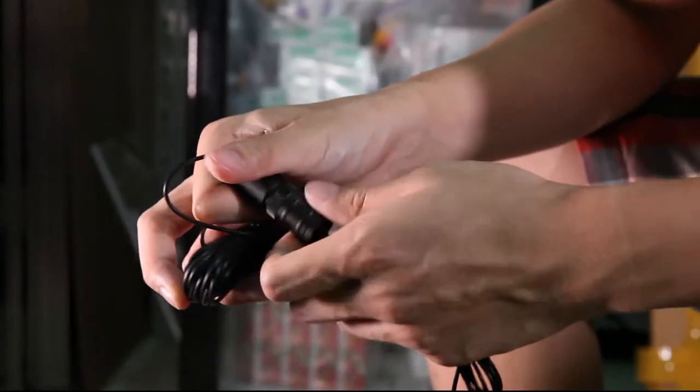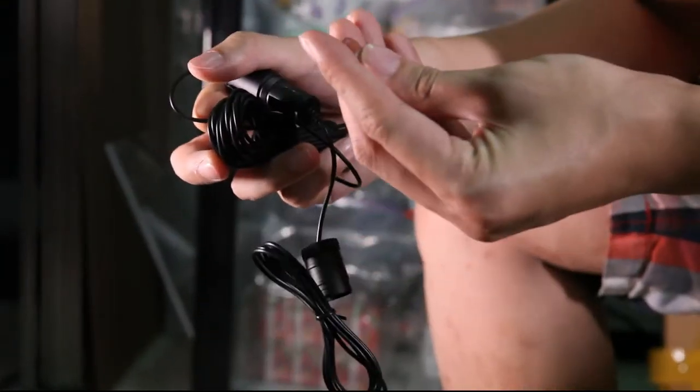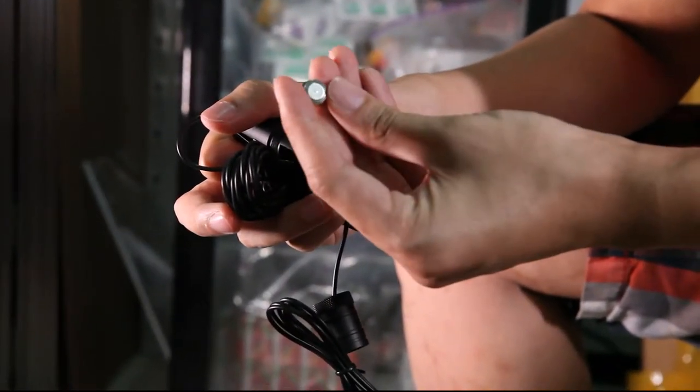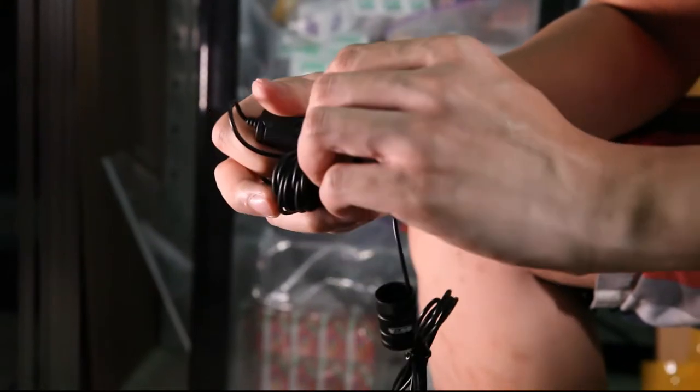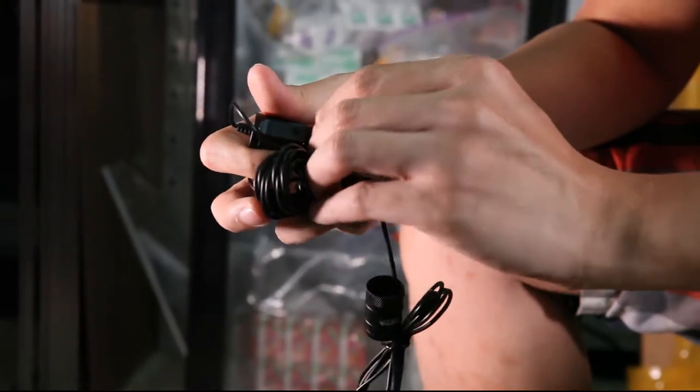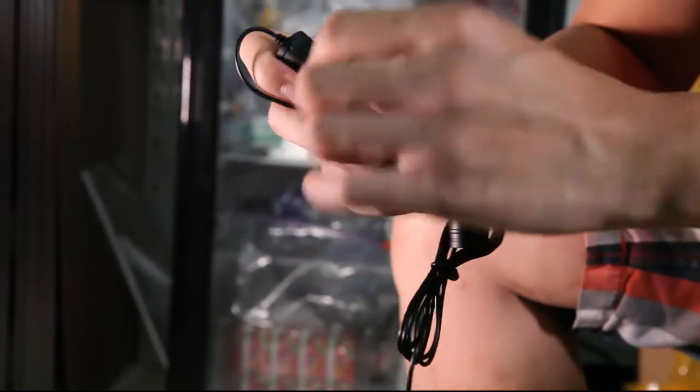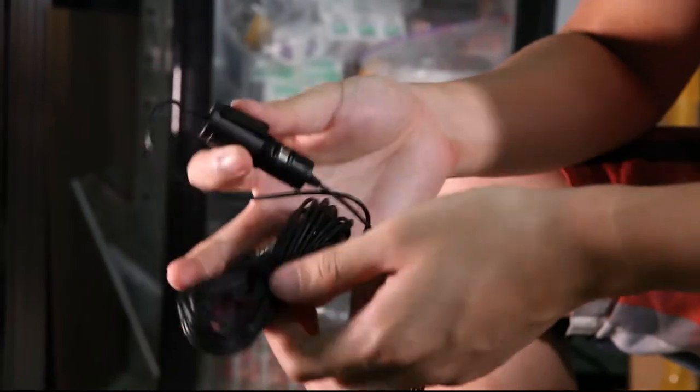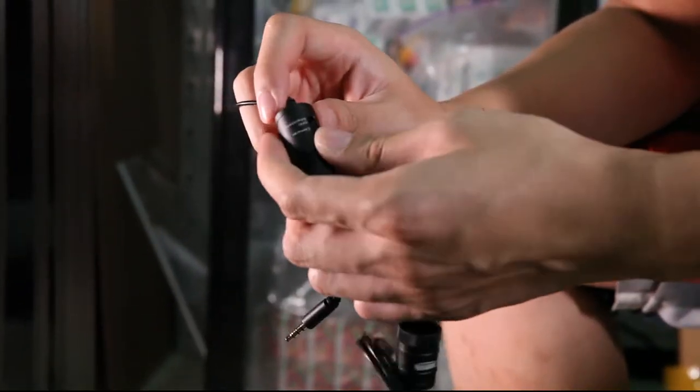This BOYA actually runs on a battery called an LR44 battery. I can show a video of this. This is how it looks. This battery is 1.5V and goes directly into this. Once you put it in, you can turn it on to use it on a recorder or camera.